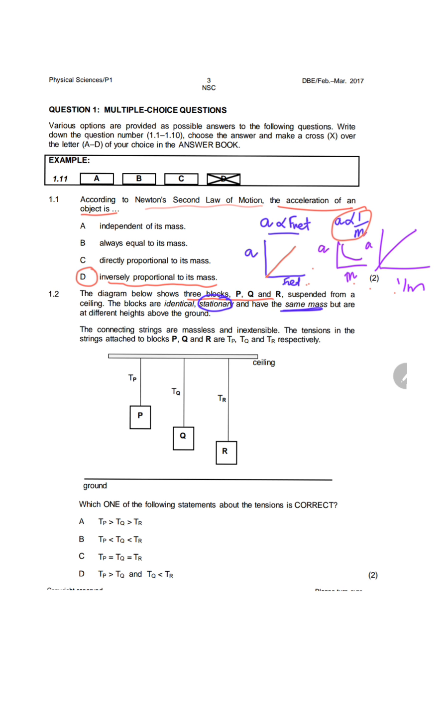The question asks which one of the following statements about the tensions is correct. We can see from the options that they are asking us to compare the magnitudes of the tensions in P, Q, and R. As always, whenever we answer a question about forces, we know tension is a force, a pulling force. We always need to draw a free body diagram.